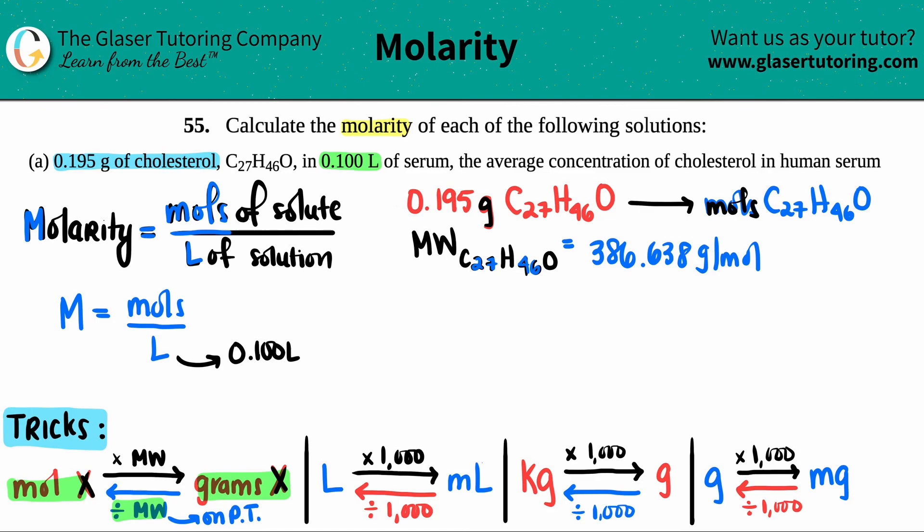Just like we said, we're gonna take the grams and divide by the molecular weight. 0.195 divided by 386.638. The grams cancel out and you're only left with mole. If I just do that math, 0.195 divided by that answer...